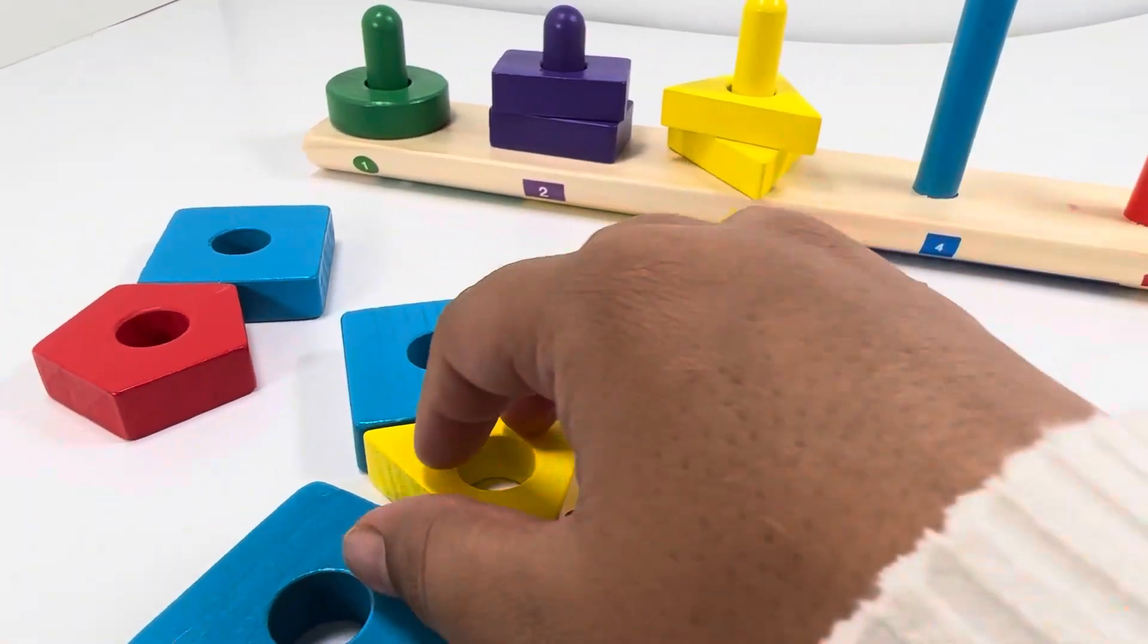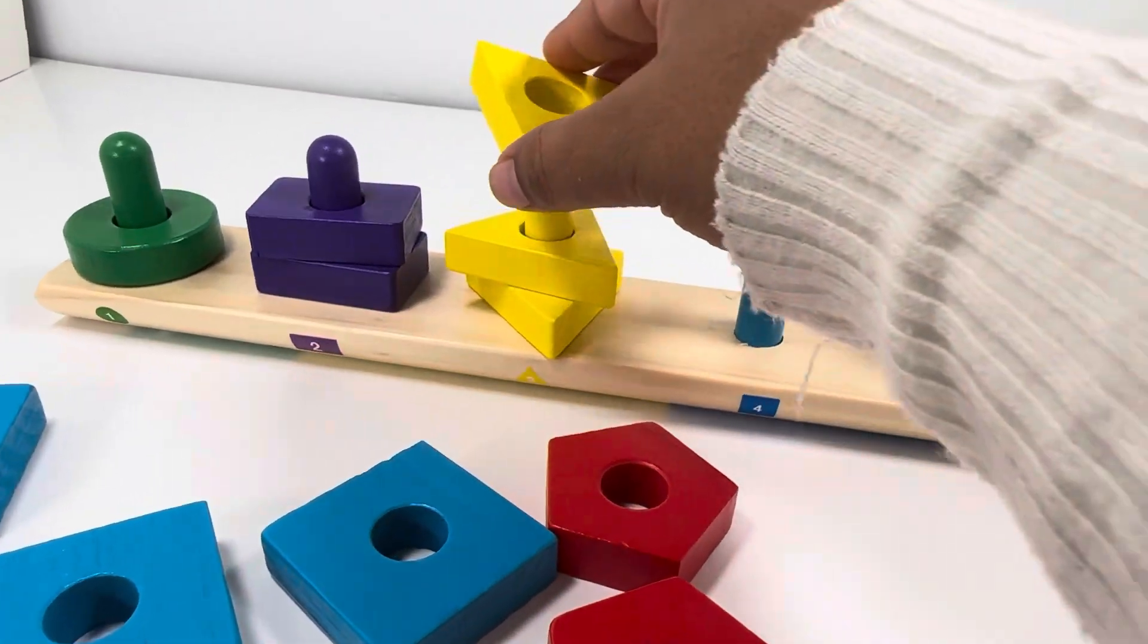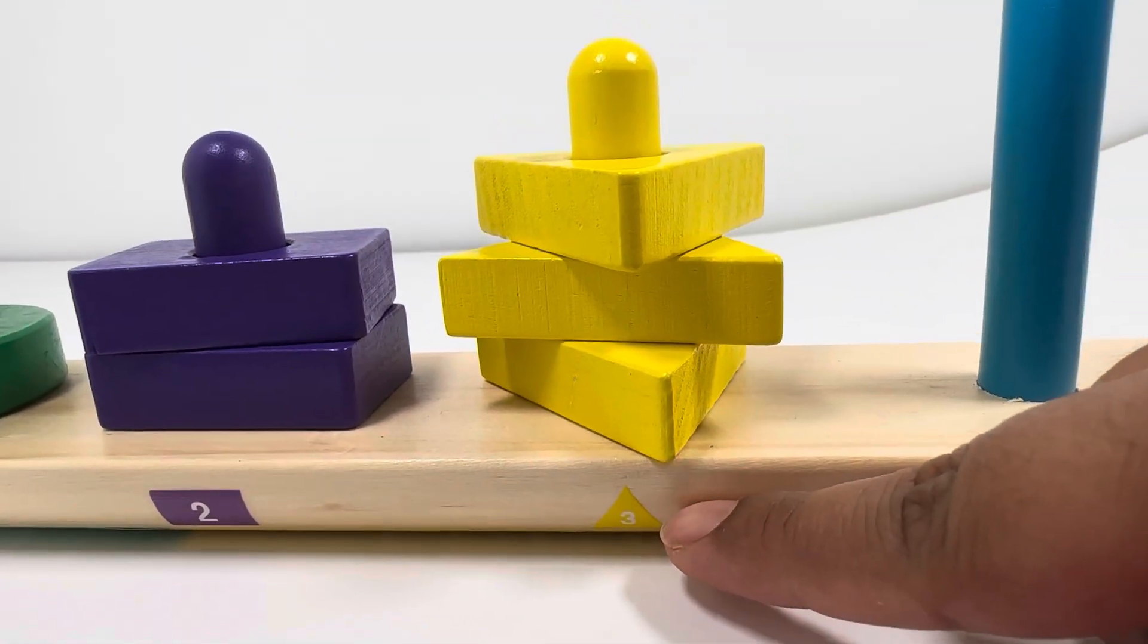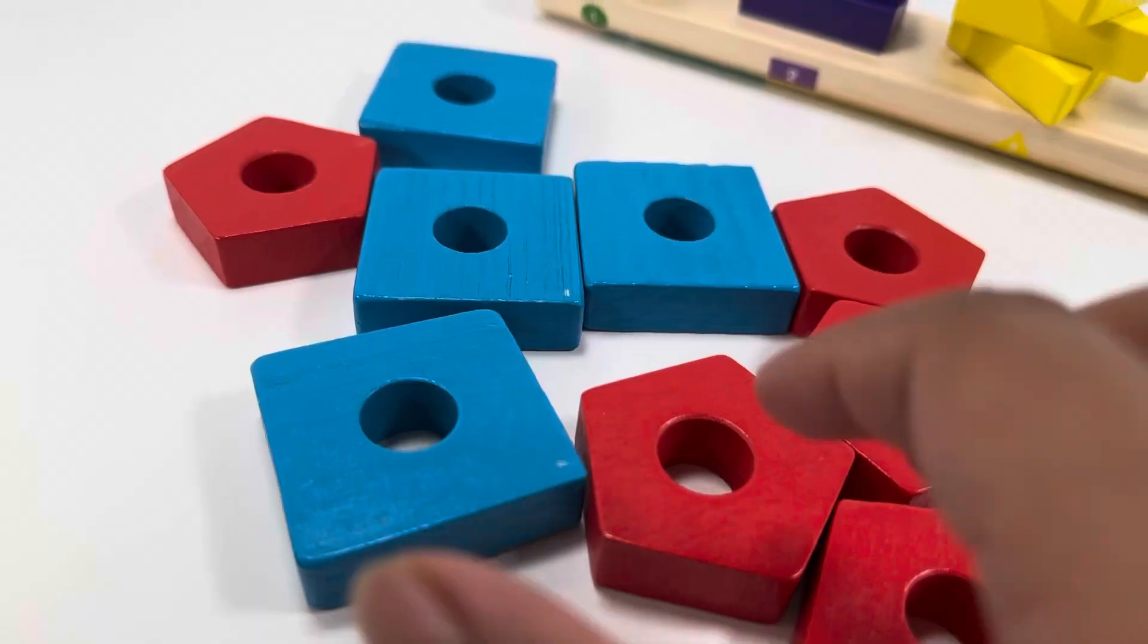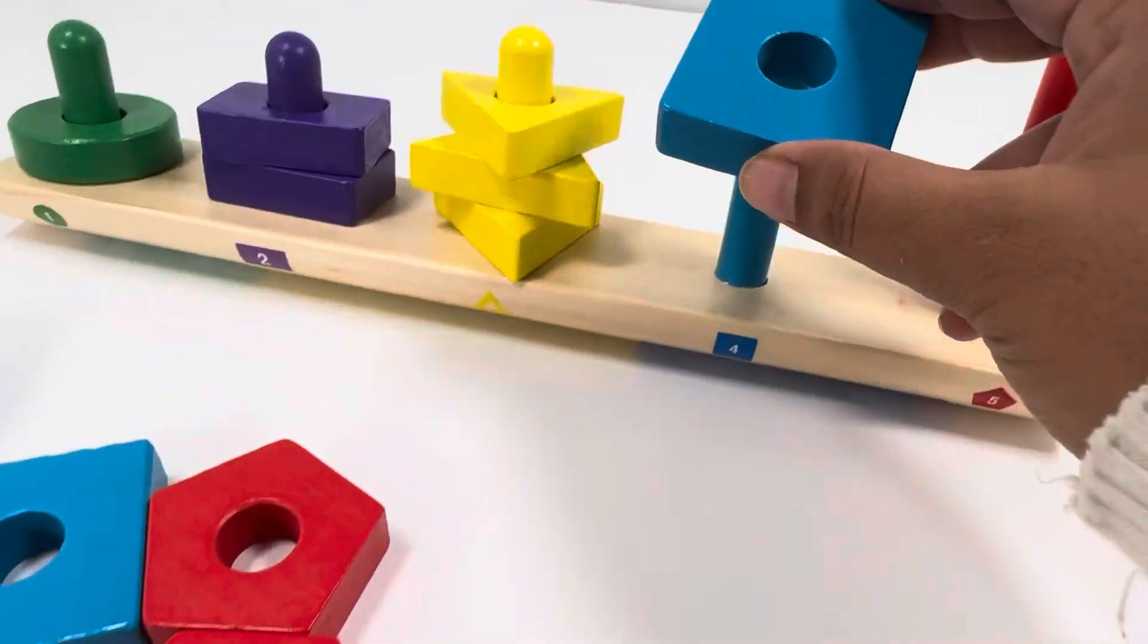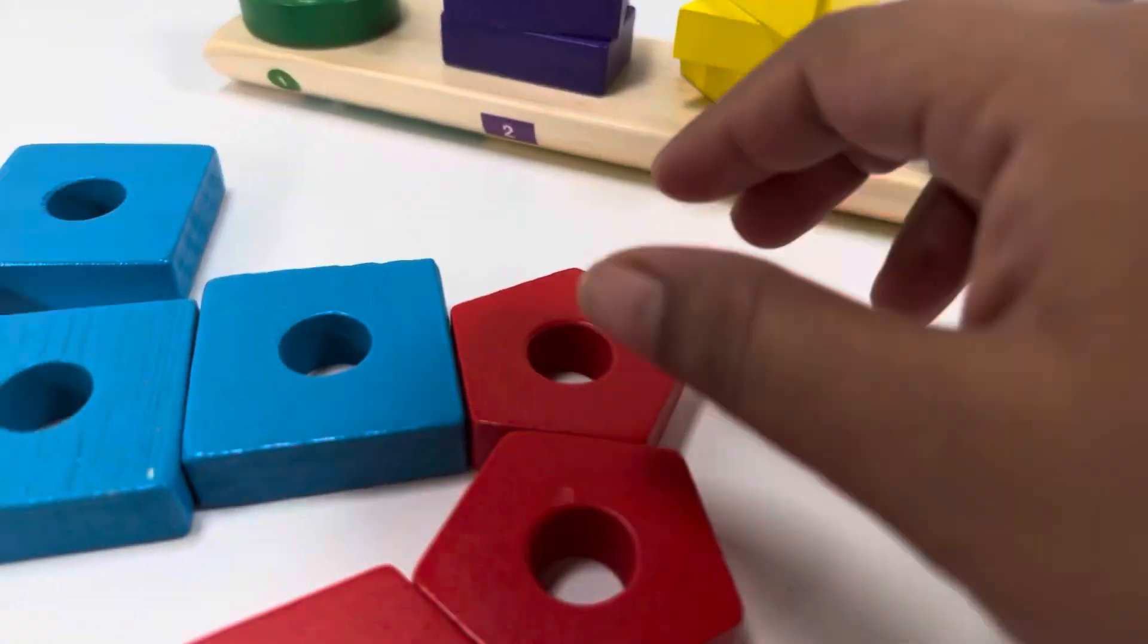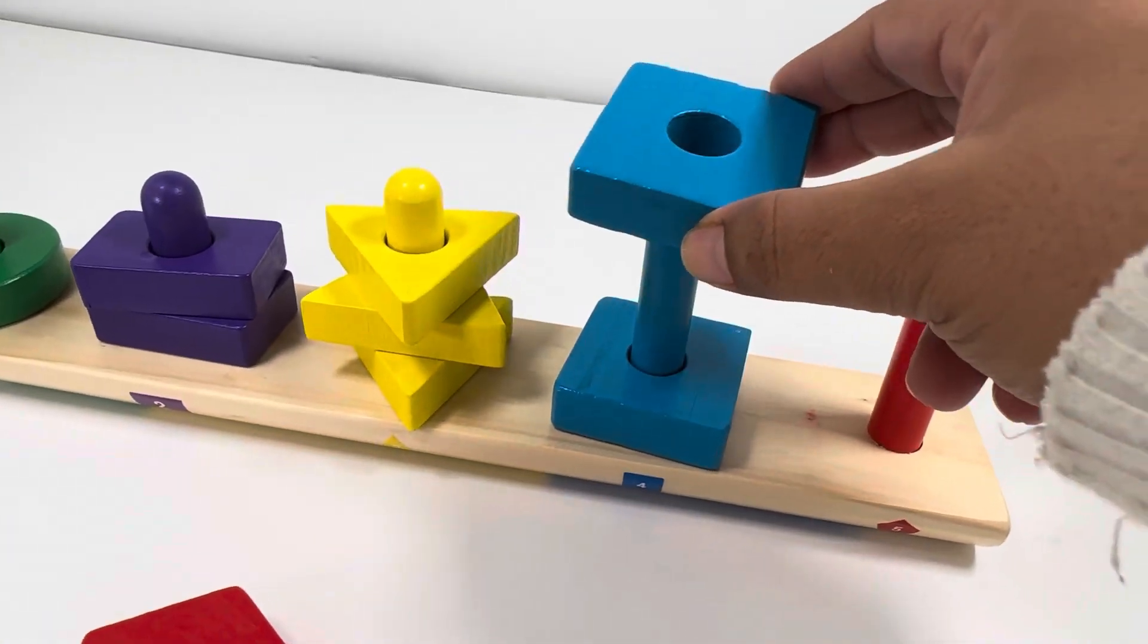Two, three—three yellow triangles. This square, blue square. One, two.